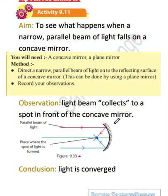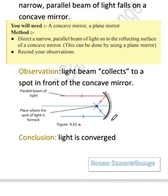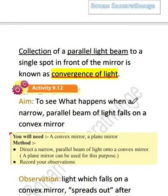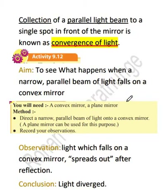Light is converged here. As per the conclusion, you can understand that light is converged through mirrors such as these. We should understand that the textbook itself has given us a clear definition for this, and knowing this definition is very important. The collection of a parallel light beam to a single point from the front of a mirror is known as convergence of light.